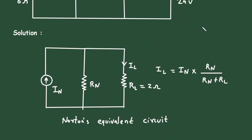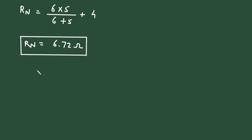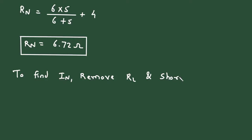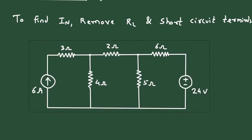Next, we have to find the value of Norton's current In. To find In, we will remove Rl and short-circuit the terminals. Here we can see, if we remove this Rl and short-circuit these terminals, then this will be the Norton's current In.